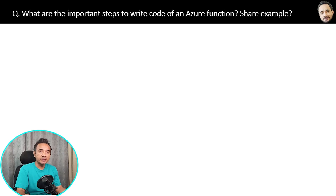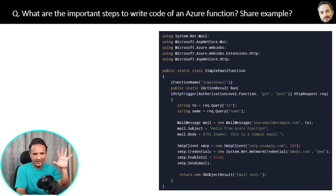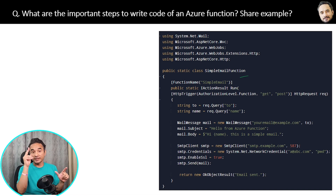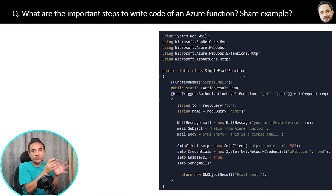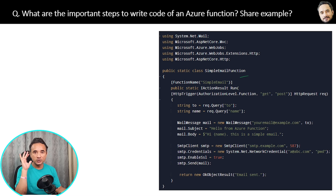What are the important steps to write the code of an Azure Function? I will show you a simple Azure Function code and explain it. First, you can write Azure Function code in C#, Java, JavaScript, and many more languages. It is not necessary that your main application language and your function code language are the same — your main application can be in Java and you can write the function in C#. They can be different, because Azure Functions run independently from the main application server.